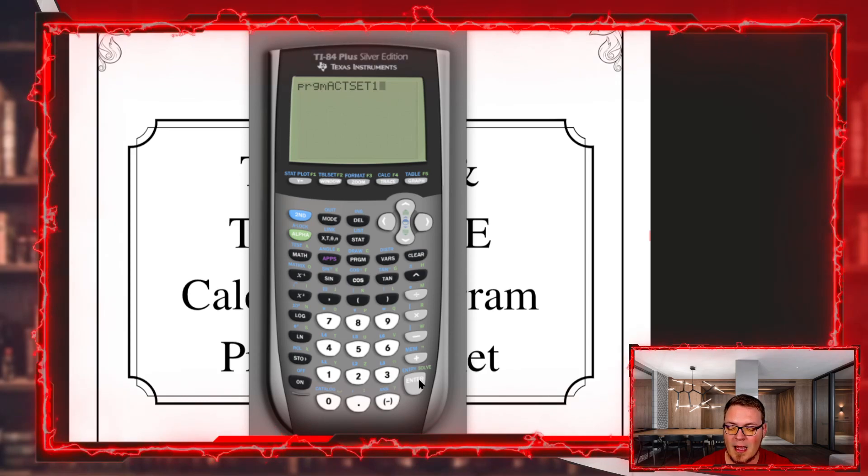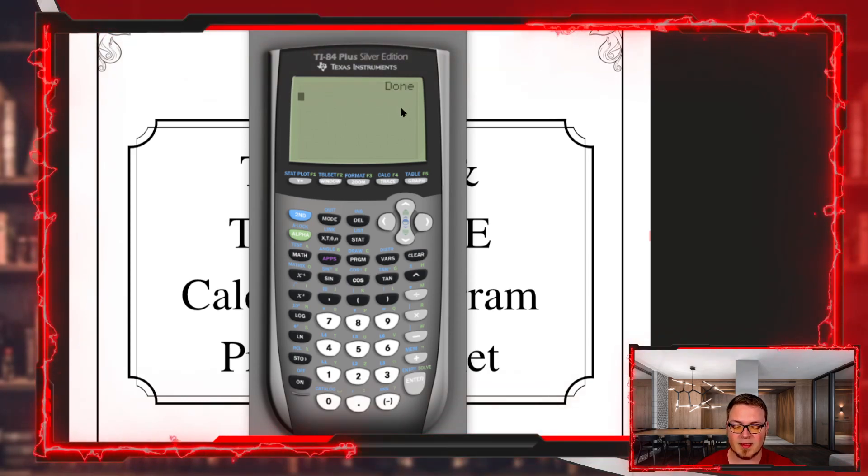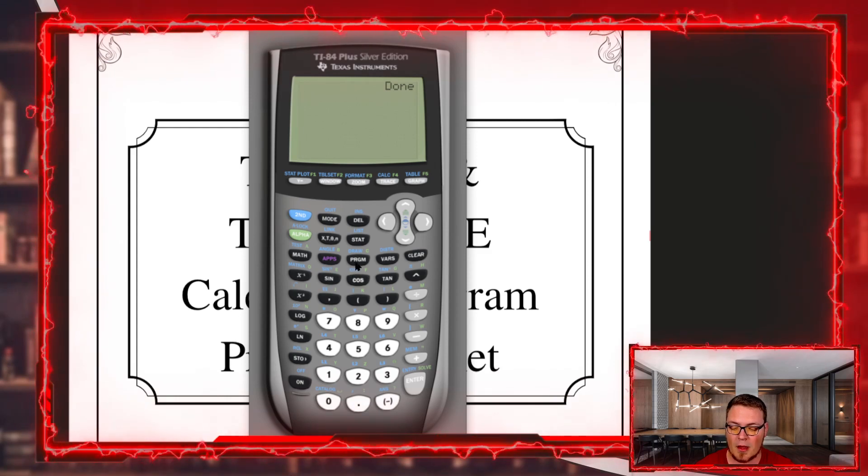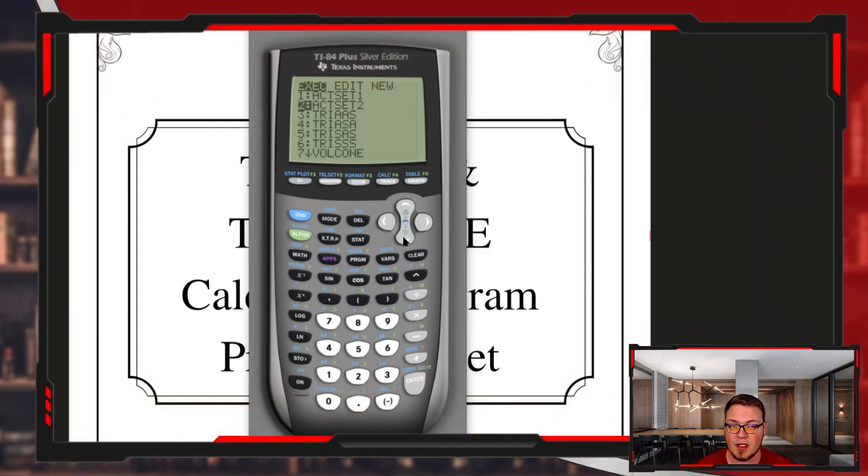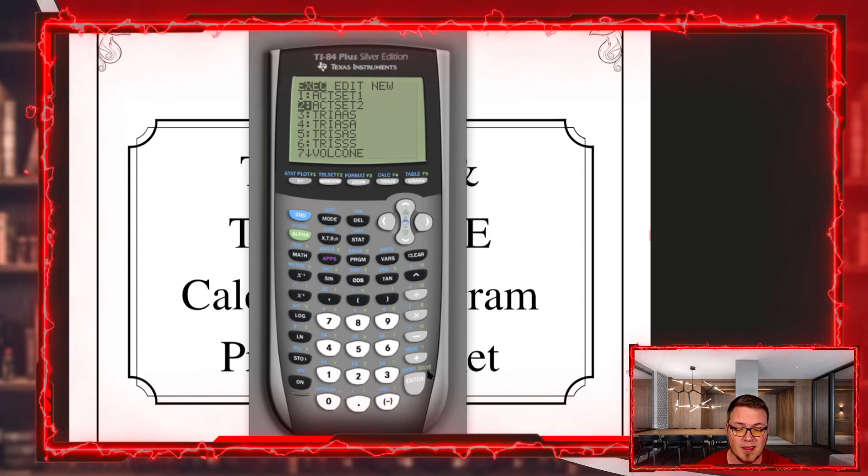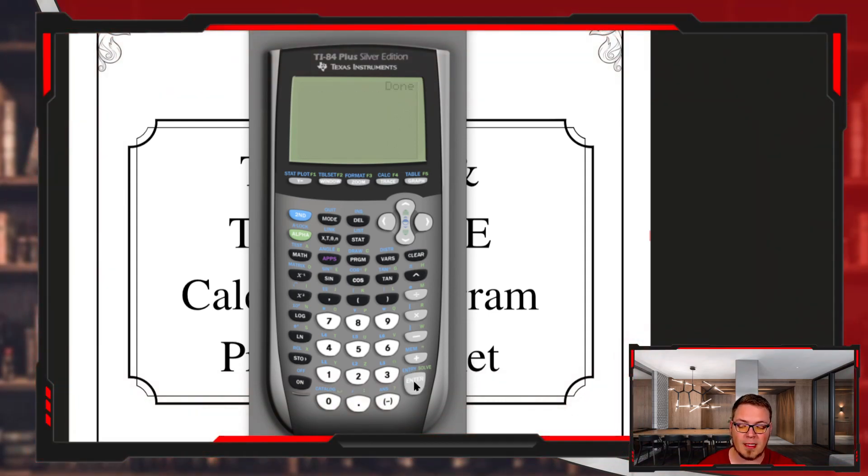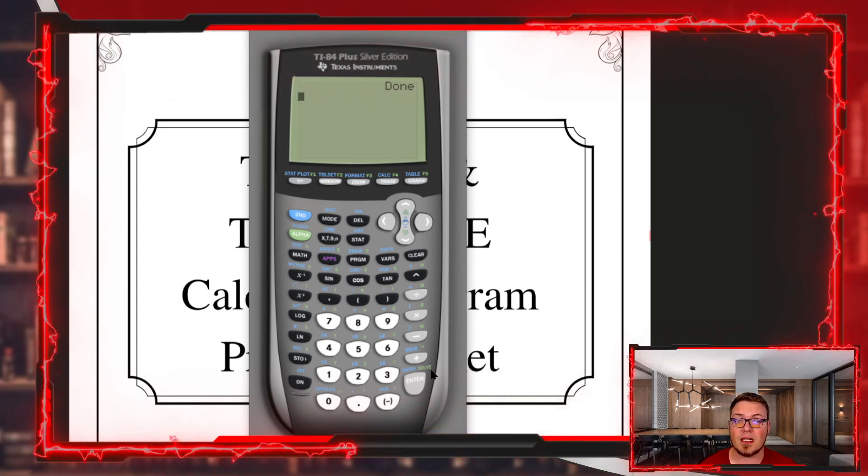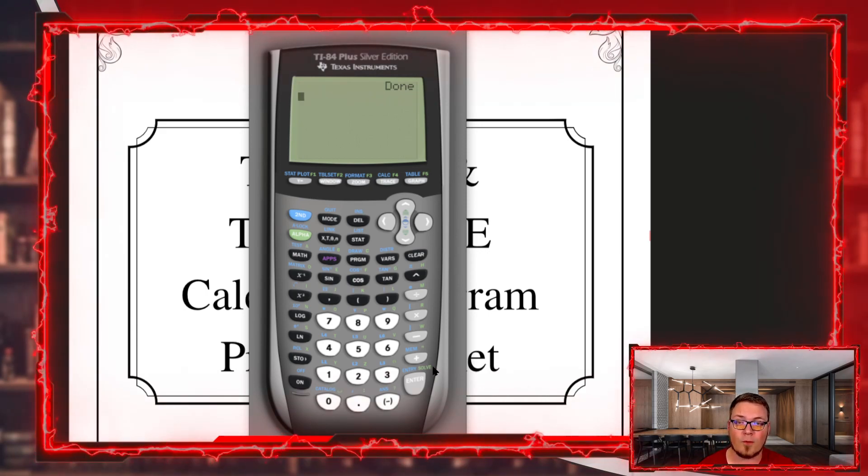To run this program, you just hit enter on it and then you hit enter again. Once it says done, that program has been run. That's how all of our programs are going to work. Now, these programs, ACT SET ONE and ACT SET TWO—go ahead and run ACT SET TWO as well—those programs are going to put your calculator in all the best modes and settings that you need for the test.